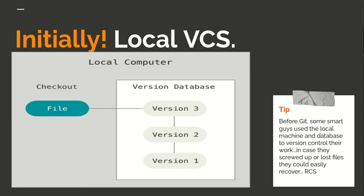Before version control systems existed, it was very tricky. Developers working on a project who wanted to keep track of the history and changes — the revisions made on their work — found it very difficult. They could zip the files and share them, or create a folder at some place to store files and timestamp those files. Some came up with a solution where they created a database and stored copies of files with timestamps, so that if they screwed up they could retrieve the other files from the database and regenerate a working copy.